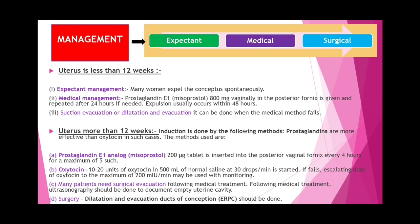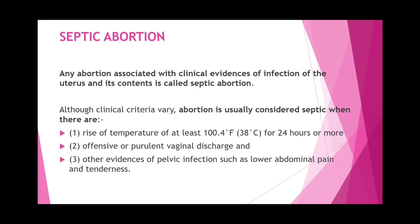Septic abortion is where abortion is associated with clinical evidence of infection of the uterus and its contents. It is usually associated with illegal induced abortion. Criteria: temperature at least 100.4°F for 24 hours or more, offensive purulent vaginal discharge, and other evidence of pelvic infection such as lower abdominal pain and tenderness.